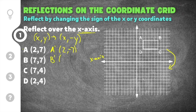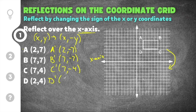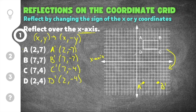Now that I know the coordinates of the vertices after the reflection, I can graph them. A prime is (2, negative 7), B prime is (7, negative 7), C prime is (7, negative 4), and D prime is (2, negative 4). I'm going to connect the vertices, and now you can see that our shape has been reflected across the x-axis. The rule is: keep the x-coordinate the same and change the sign on the y-coordinate. Moving on to number 2.